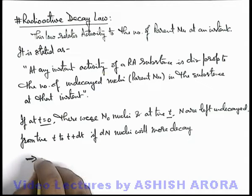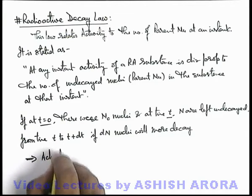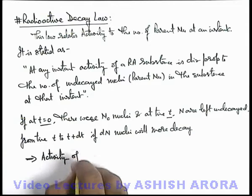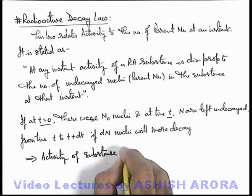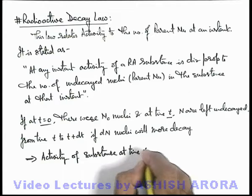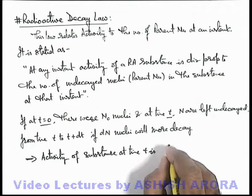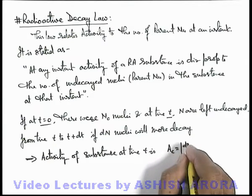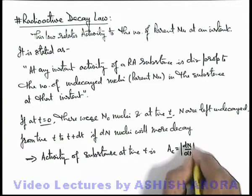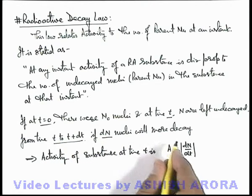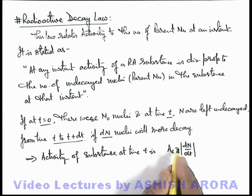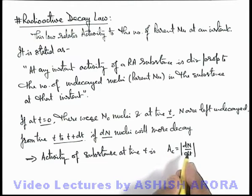This implies activity of substance at time t is: activity is equal to mod of dN by dt, which we've already studied. That if in time dt, dN nuclei are decaying, that means at this instant the instantaneous value of activity will be dN by dt.